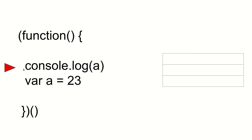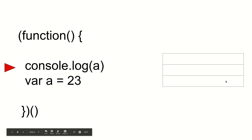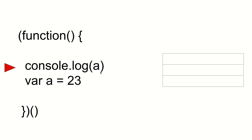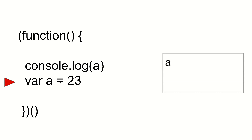So the very first statement is console.log(A), and here is our function's local stack. This is an expression and it cannot be computed during the compilation phase, so we move on to the next line — the variable declaration of A. What actually happens is that a variable A is going to be put on the local stack of this function, but its value is still not defined. The function knows it has a variable named A, but its value is still unknown.